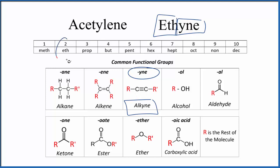'Eth' tells us that we have two carbons. So we have two carbons with a triple bond.